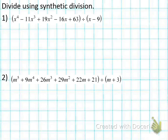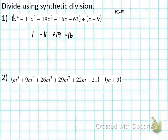The form of our divisor has to follow x minus a, and this a could be any number. In this particular one, a is equal to 9. So I know I can use synthetic division here. Then I want to make sure my terms are in descending order — they are: x to the 4th, x to the 3rd, x squared, x to the 1st, and the constant. So I'm going to write down my coefficients: 1, negative 11, 19, negative 16, and 63.